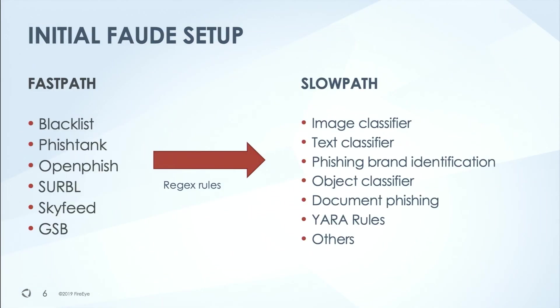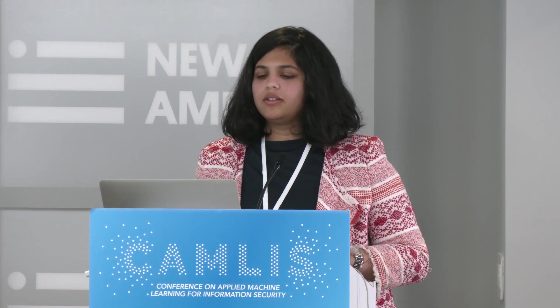FOD consists of two components. One is something called the fast path, which is the fast analysis component providing verdicts in a fraction of a millisecond. It consists of blacklist, OpenPhish, Serval, GSB — just a bunch of lookups and lists. Whenever there's a URL miss from fast path, it goes to the slow analysis component called the slow path, which has more involved and sophisticated ML and classification models that look at images on websites, HTML text, Yara rules, and all that. There's also a regex-based model that sits as a medium of down selection between the two.